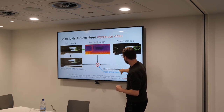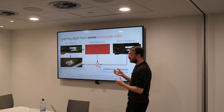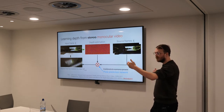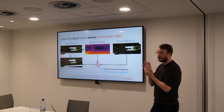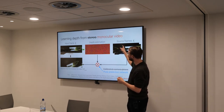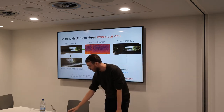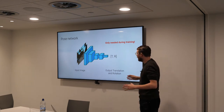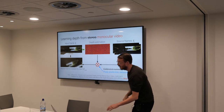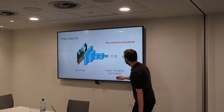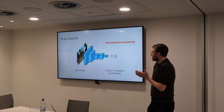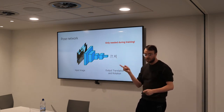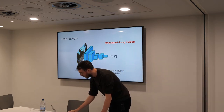Basically the same principle: we're predicting some relative pose between pairs of frames over time and the depth at the same time, and we have access to sequences of frames before and after the particular input frame, which we use as a source of supervision. This results in an extra component — the need to predict the relative pose — which you can think of as basically another neural network. We have a network that takes a sequence of images as input and predicts the relative transformation between them.